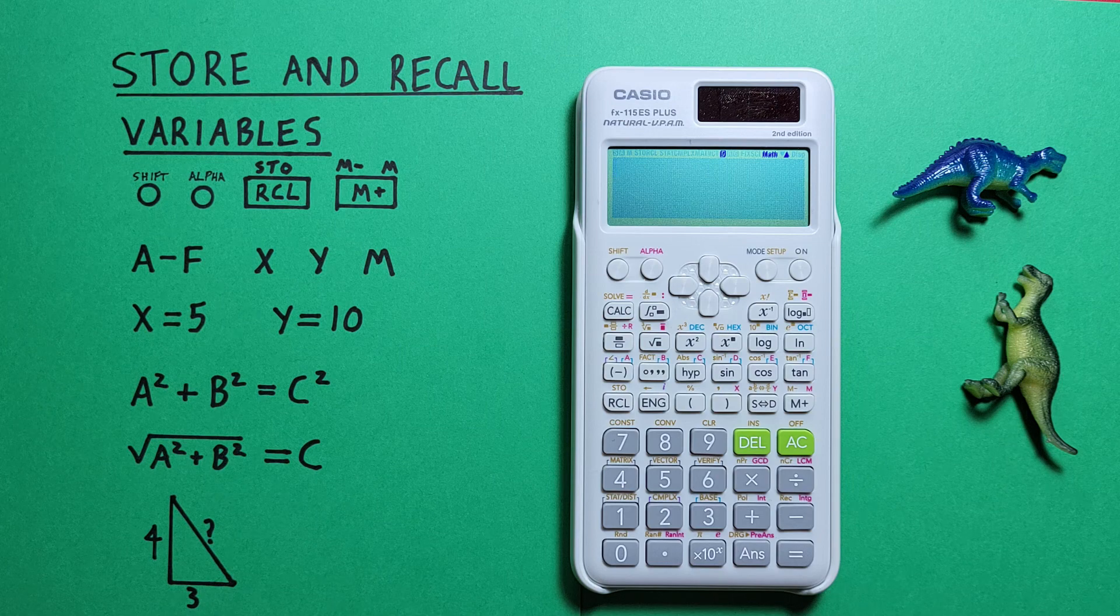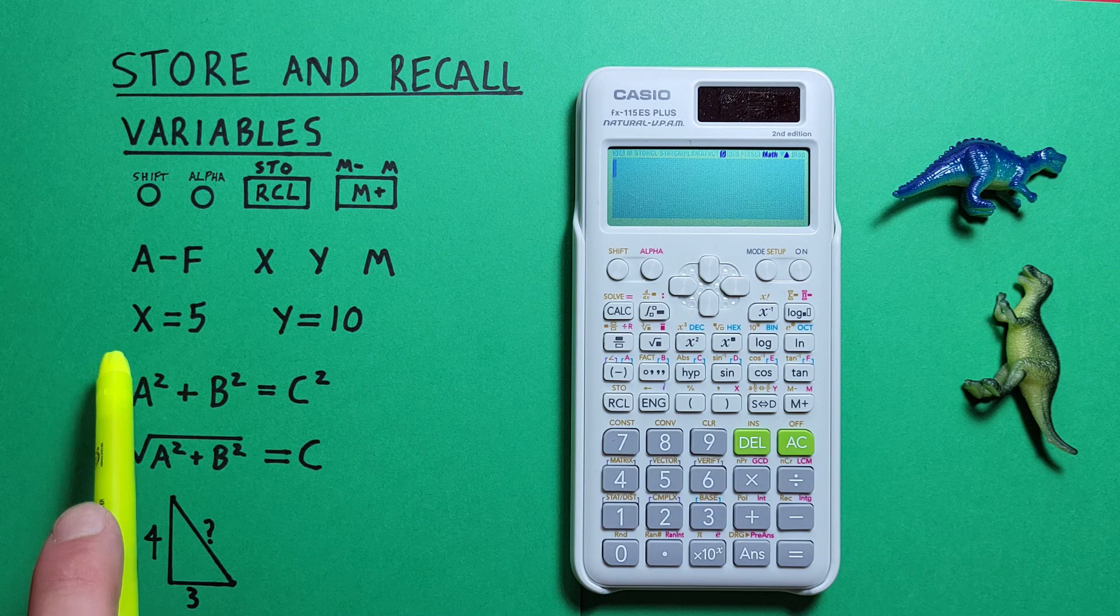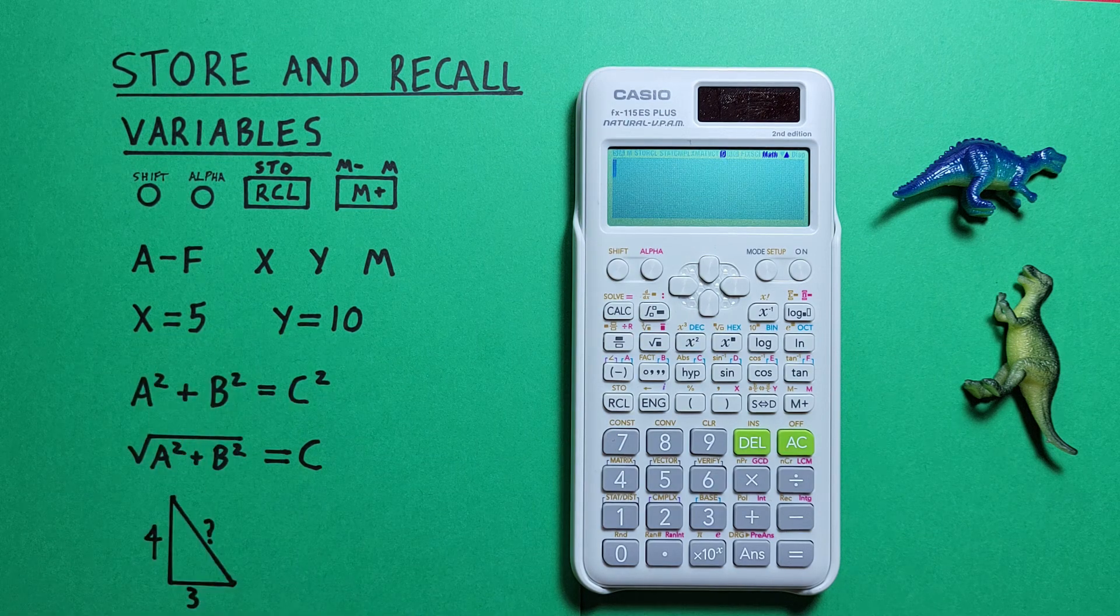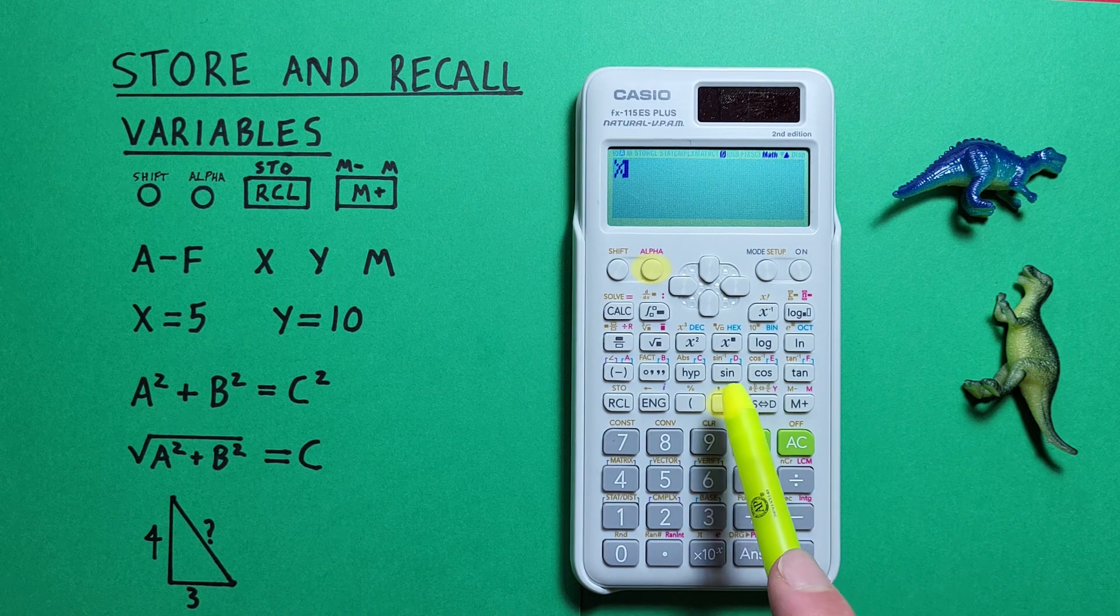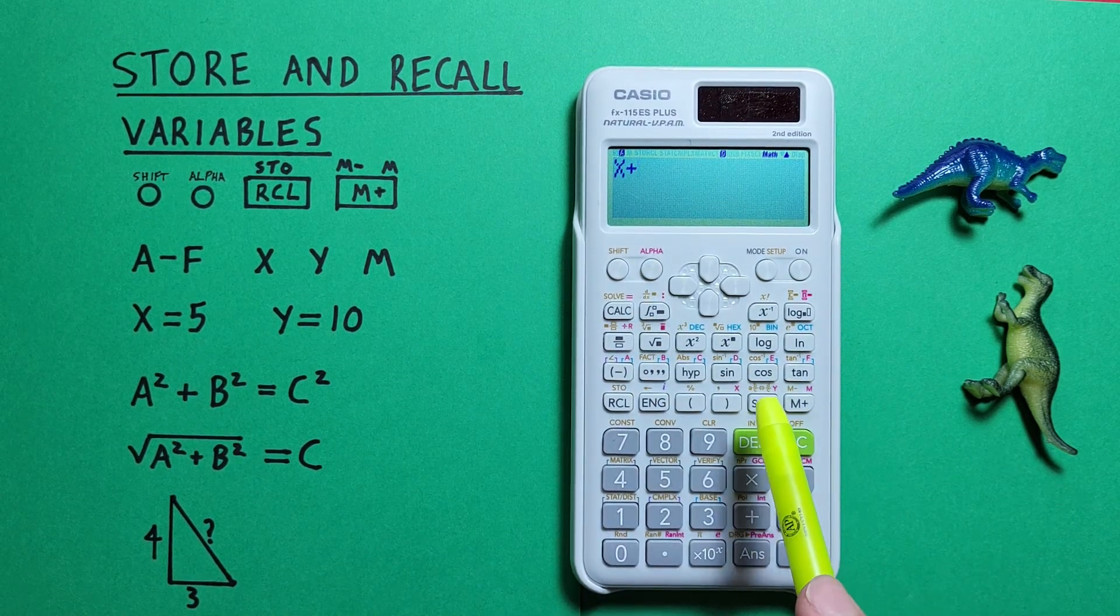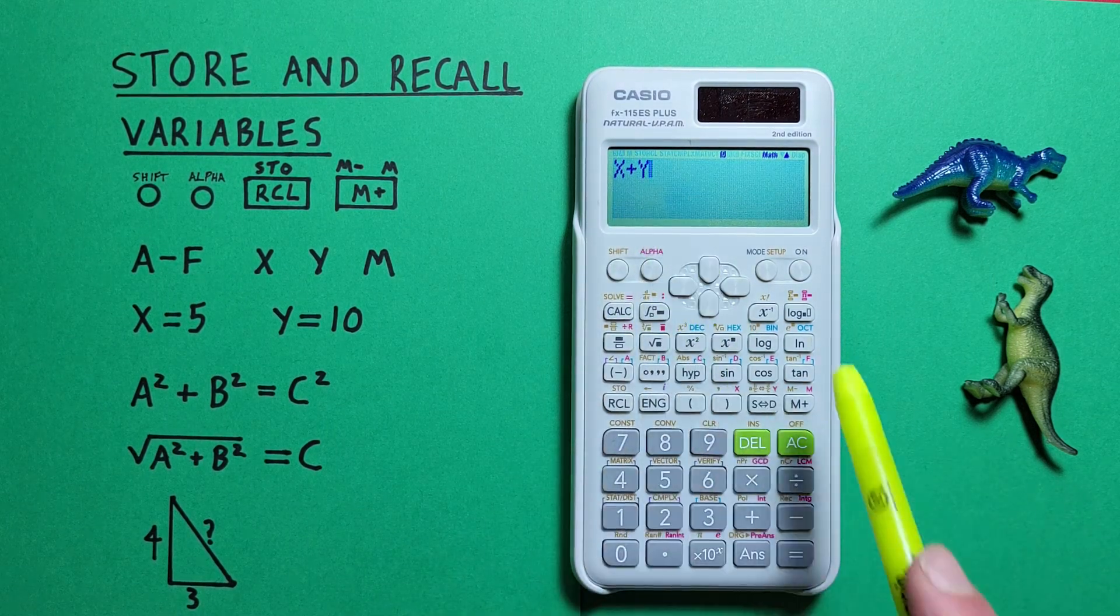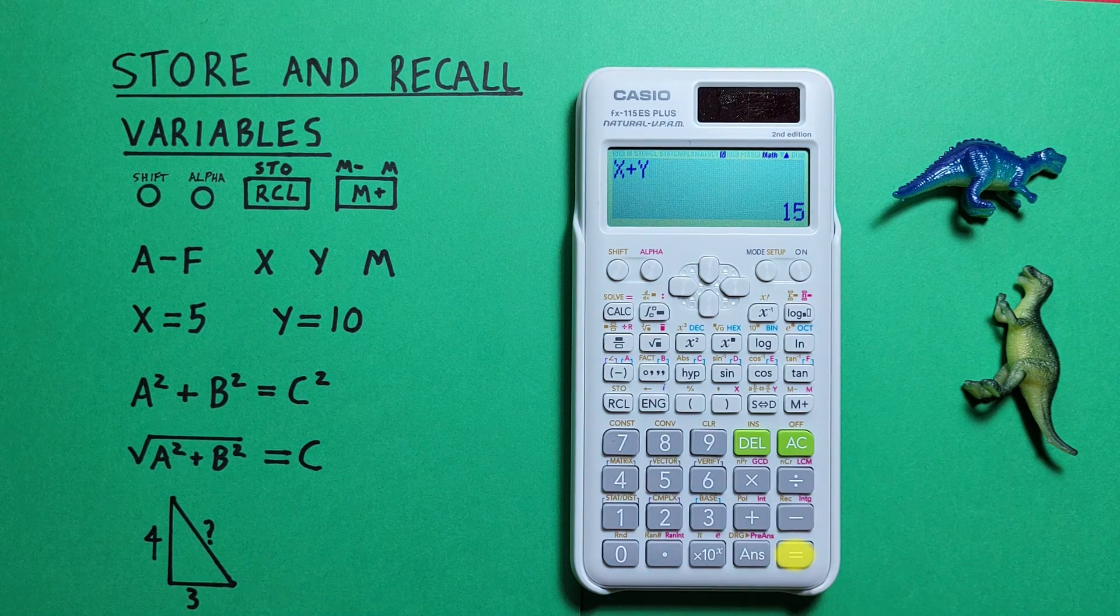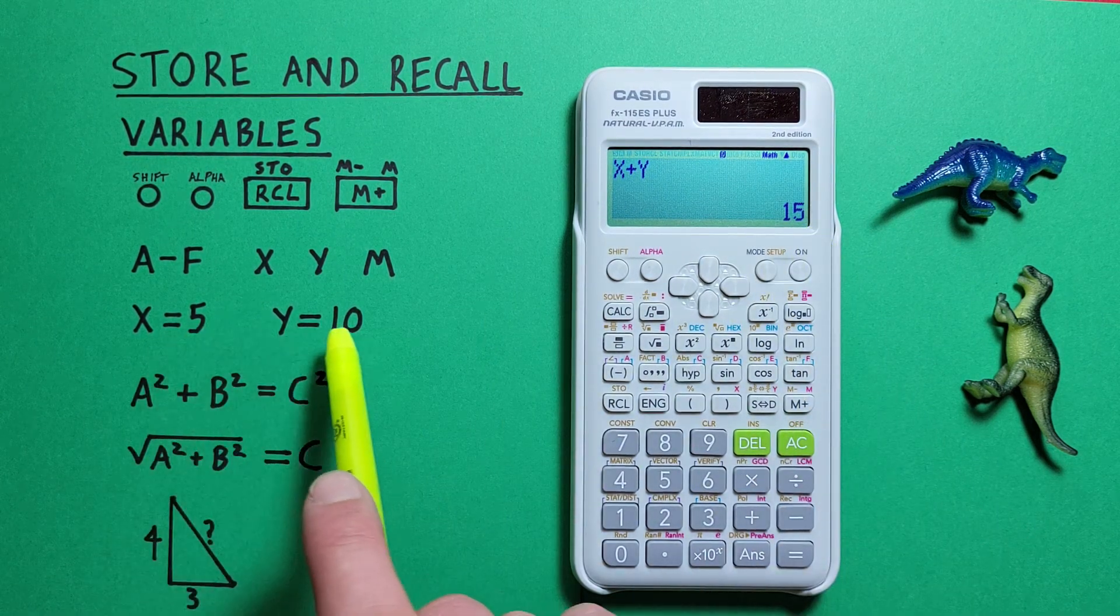We can also recall these values using the alpha function. Let's say we wanted to do X plus Y. Well to do that we can press alpha X plus alpha Y. There we go, X plus Y equals and we get 15 which is the same as 5 plus 10.